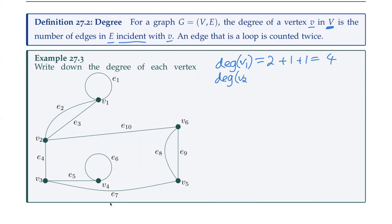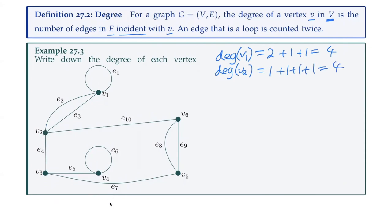We can go through and do this for all of the vertices. The degree of V2 — counting all the edges incident to it — gives one plus one plus one plus one, equal to four again. For V3, we have one, two, three — the degree of V3 is equal to three. I'll leave the rest of those for you as an exercise.